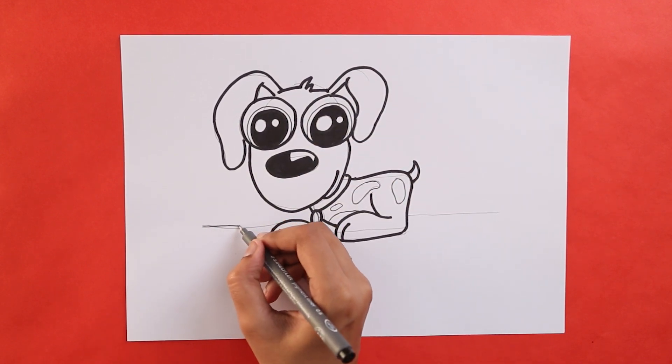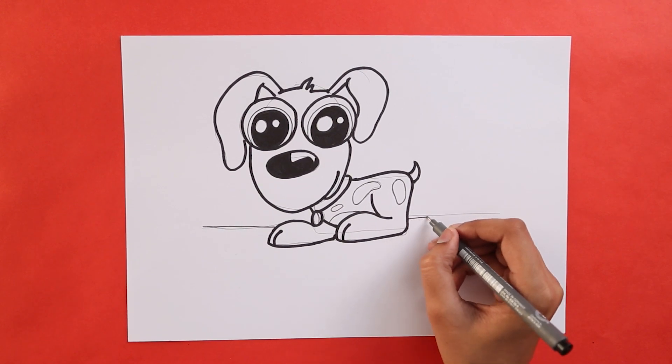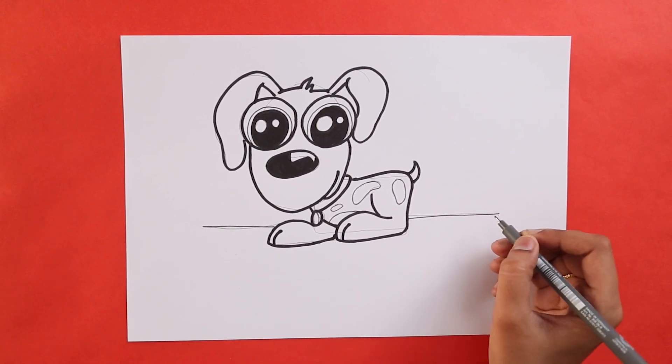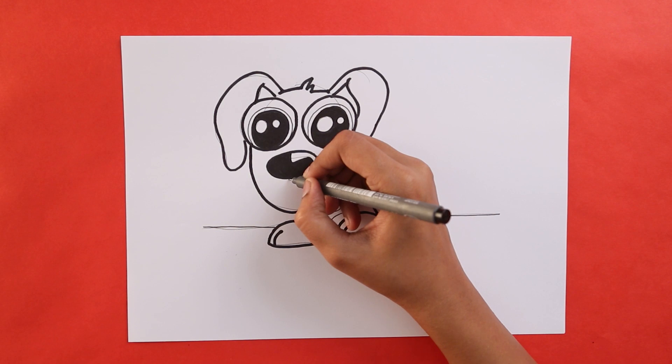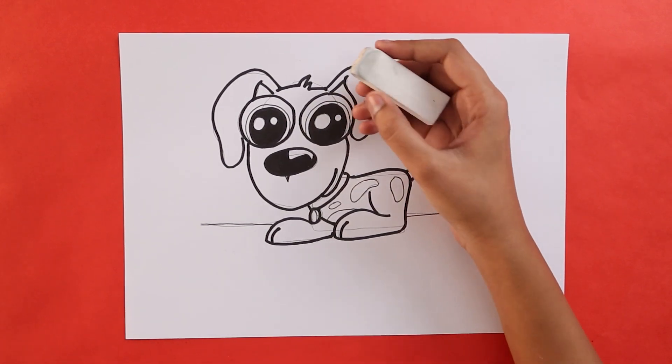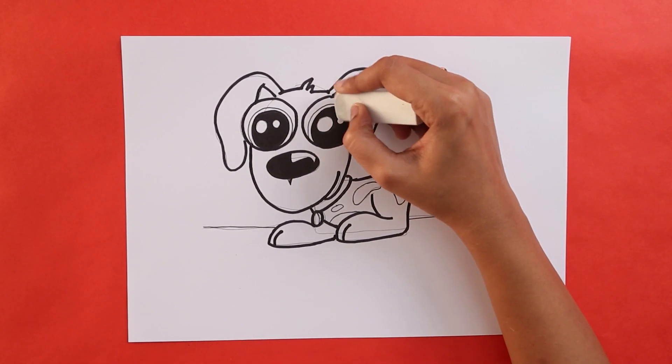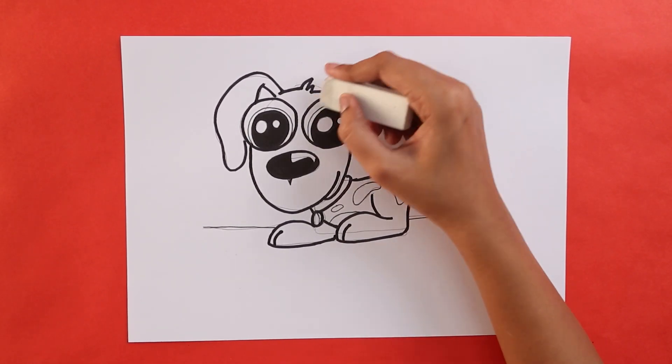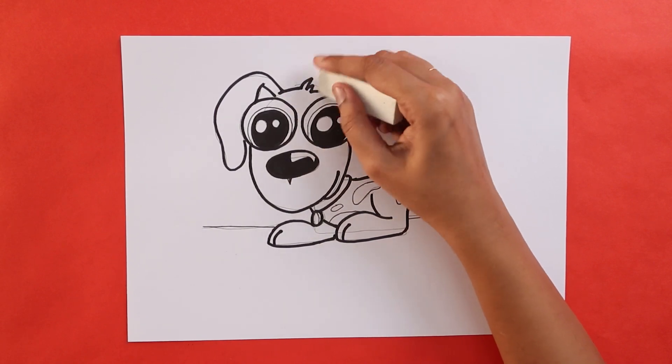You can also draw a straight line which will be the ground. And we are done with the drawing. How does your dog look? Before we go on to the next step, make sure that you take your eraser and erase all the pencil markings so that it'll look cleaner and nicer.